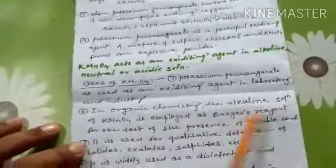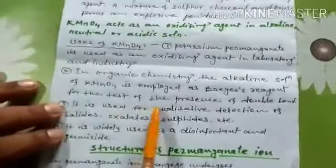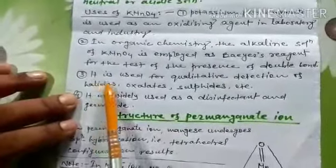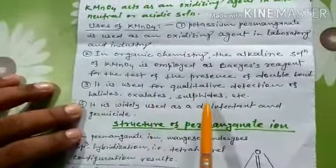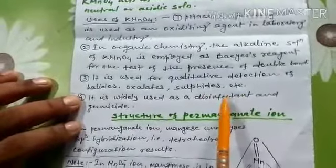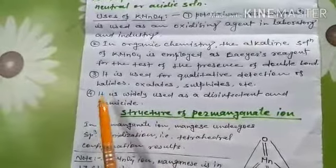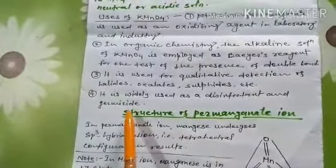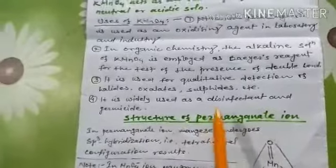In organic chemistry, the alkaline solution of KMnO₄ is applied as Baeyer's reagent for the test of the presence of a double bond. Potassium permanganate is also used for qualitative detection of halides, oxalates, sulfides, etc. Practically, KMnO₄ is much more important. Lastly, KMnO₄ is widely used as a disinfectant and germicide.